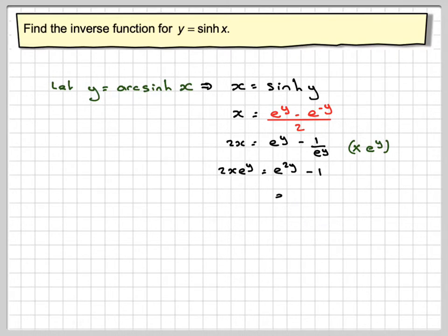This is a disguised quadratic in y now. We've got e to the 2y minus 2x e to the y minus 1. So we now use the quadratic formula with a being 1, b being minus 2x, and c being minus 1.